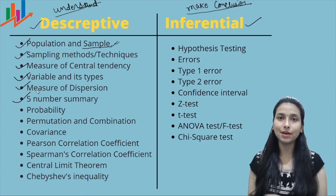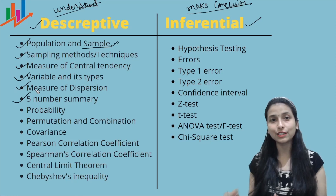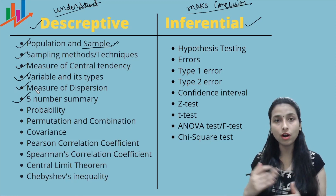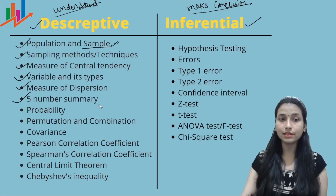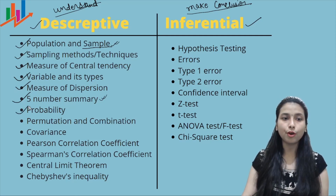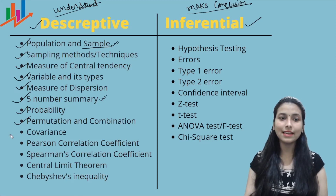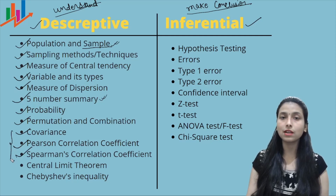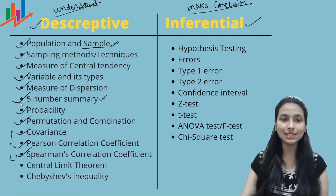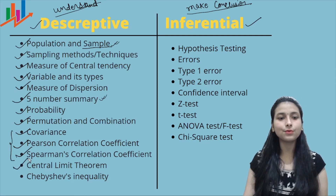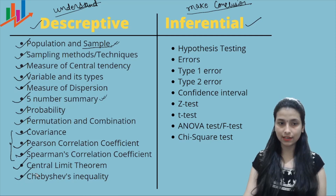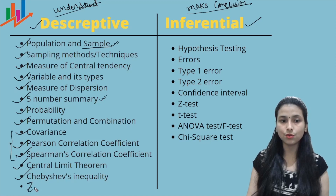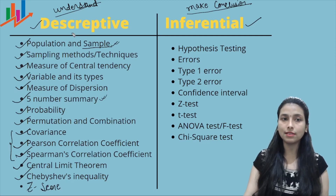The next topic is five-number summary, which is very important in the context of data science for project work. After that comes probability, permutation, and combination. Then covariance, Pearson correlation coefficient, and Spearman correlation coefficient — these three are very interesting and will be covered in sequence. Finally, the central limit theorem, Chebyshev's inequality, and z-score are also covered under descriptive statistics.